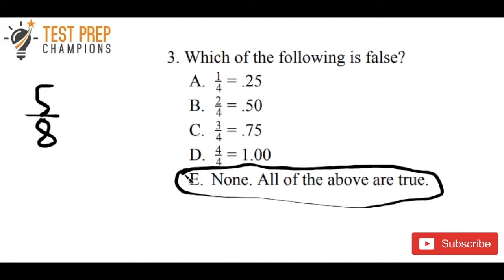A really easy way to remember the fourths is to think about quarters. If you've got one quarter, you've got 25 cents — so 1/4 equals 0.25. Two quarters is 50 cents, so 2/4 equals 0.5. Three quarters is 75 cents, so 3/4 equals 0.75. And four quarters makes a dollar, so 4/4 equals 1.